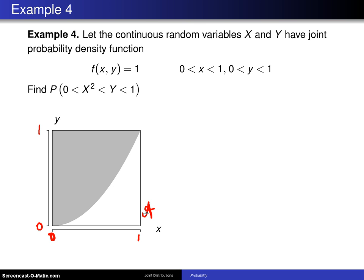Now the next thing that we'd like to find is the probability that x squared is less than y is less than 1. And that can be found with a double integral. We know that double integral will go over the joint probability density function. So this is just the integral of 1. And now we have to decide whether to go dy dx or dx dy.